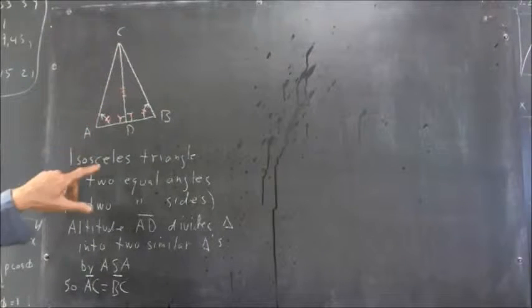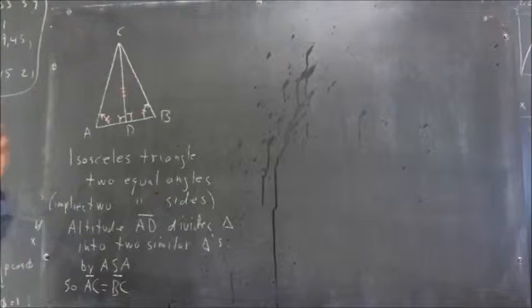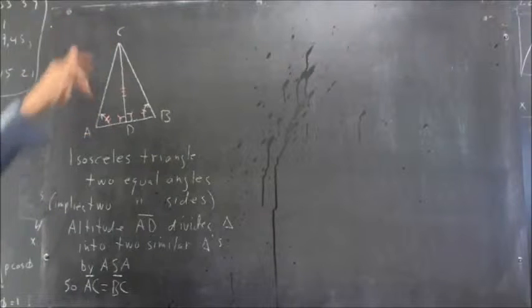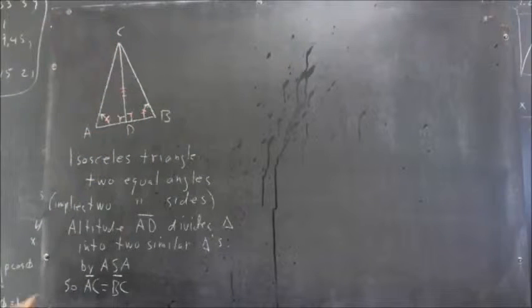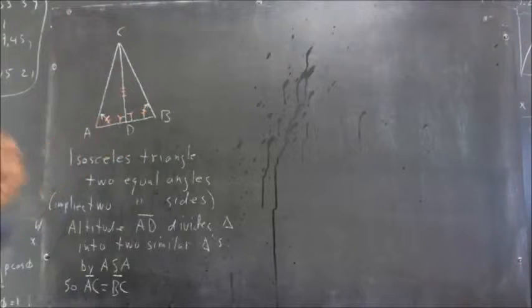Okay, here we have a triangle that I'm going to say is an isosceles triangle. Now, an isosceles triangle is a triangle we could define as a triangle where we have two sides equal, or we could define it as a triangle where we have two angles equal.